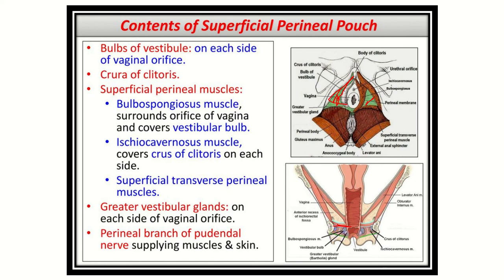Anterior to the perineal membrane, the structures located are the contents of the superficial perineal space. In the second picture, we can see the crura of the clitoris, ischiocavernosus, vestibule, greater vestibular gland, vestibular bulb, and bulbospongiosus — these are the structures located in the superficial perineal space.